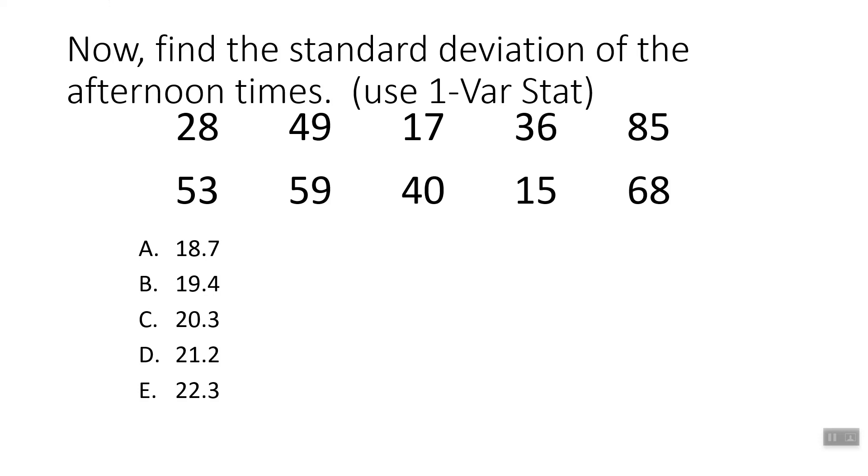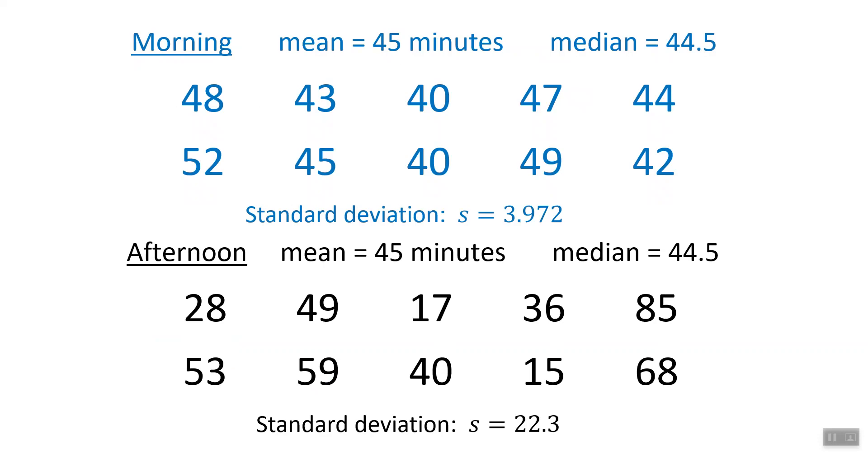Now we can find the standard deviation of the other set of numbers. We can take these guys, put them into a list, do our one variable stats and it will tell us our standard deviation. If you want to do that, pause the video and go ahead. And if we do that, we get 21.2 or 22 point something. The other one was 3.97. There is a big difference between these two sets.